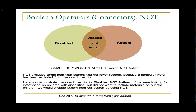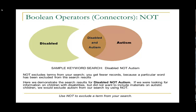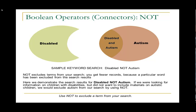Here is a sample keyword search using the Boolean operator or connector NOT. NOT excludes terms from your search — you get fewer records because a particular word has been excluded from the search results. Our sample keyword search in this case would be disabled NOT autism. If we were looking for information on children who are disabled but did not want to include materials on autistic children, we would exclude the word autism from our search by using NOT. Use NOT to exclude a term from your search.